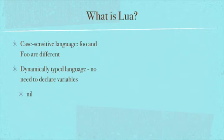Nil is a type and it just means nothing. So the first time you create a variable, it equals nothing. It can also equal boolean, which is true or false. A variable can be a number. It can be a string. It can be a function. And it can be a table.